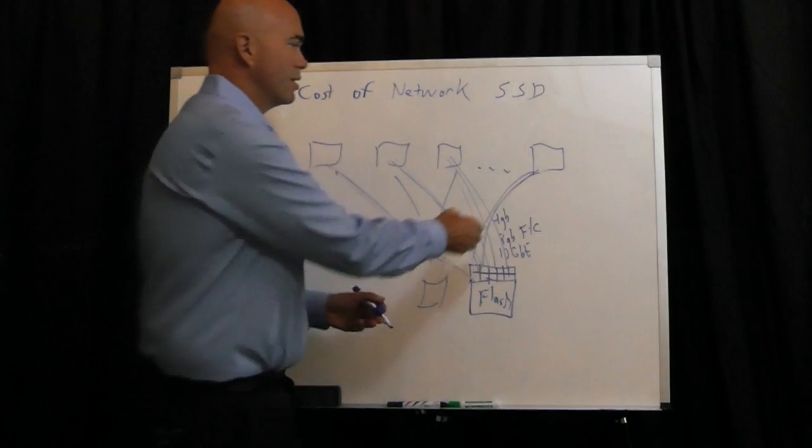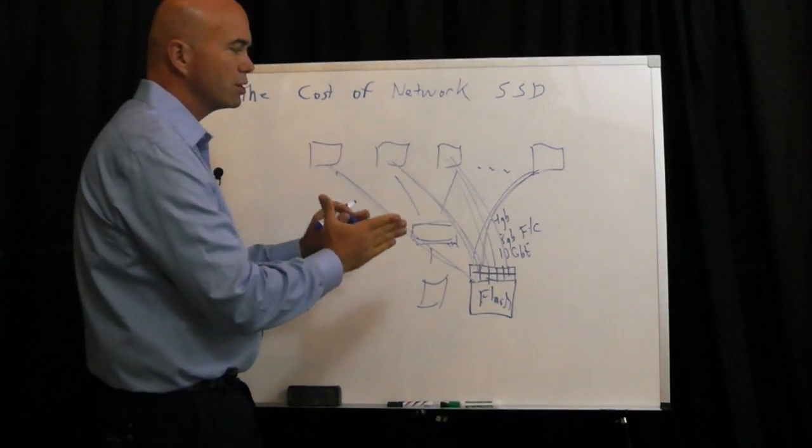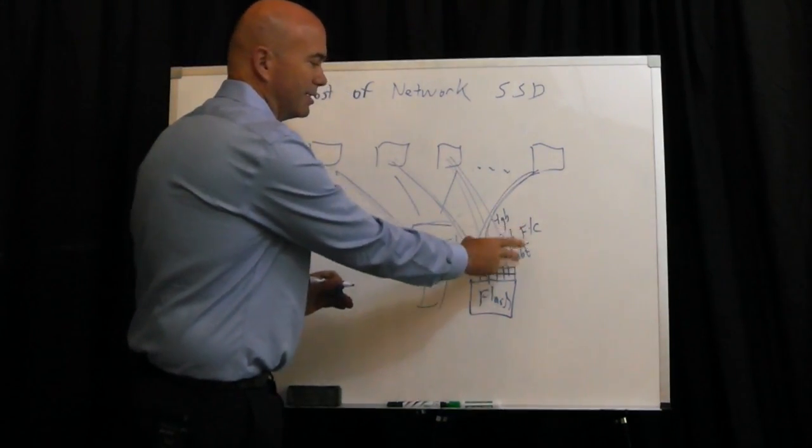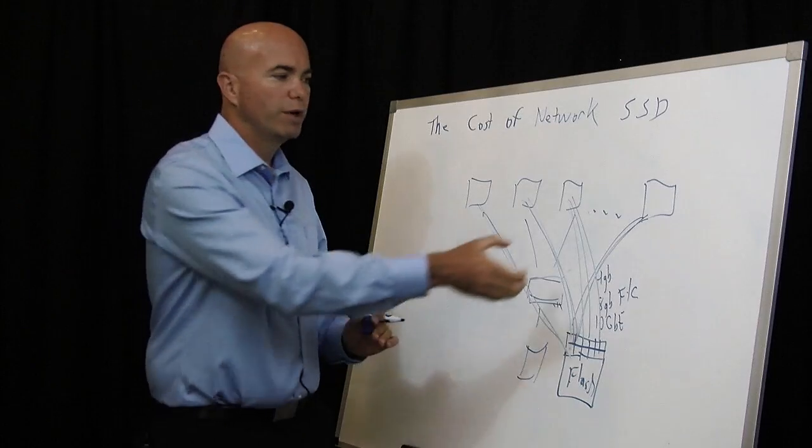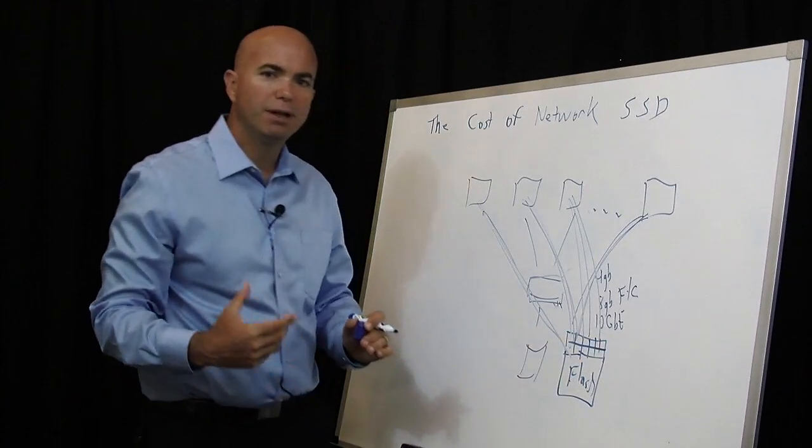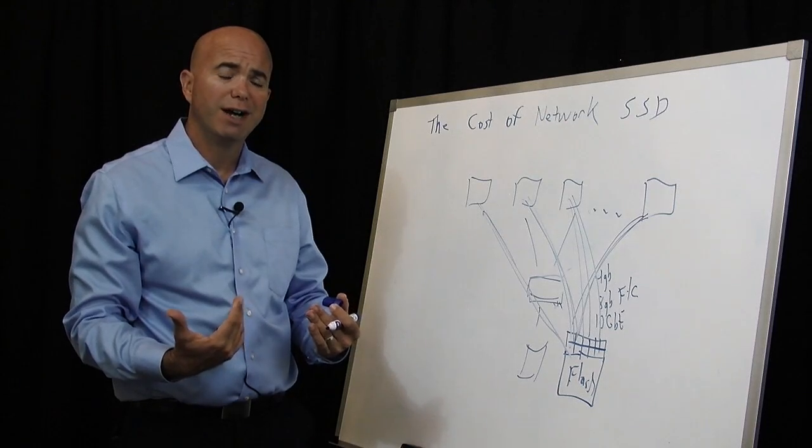The advantage of doing that is these can all be trunked. Most hosts don't need the full performance of these 8 gig and 10 gig segments. So we can trunk them, put them into the switch, and then be in very good shape to take full advantage of the flash device.